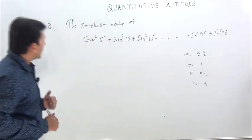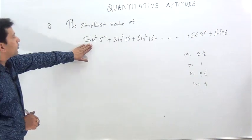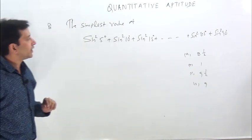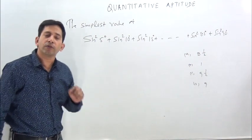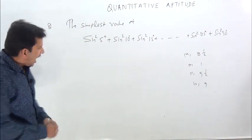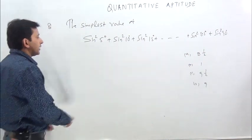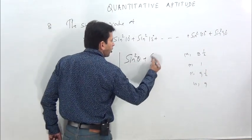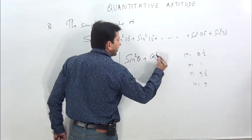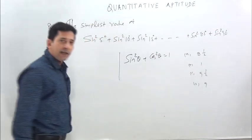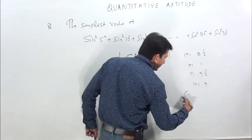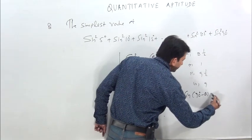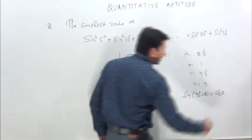I have written a question. Look — what is sin²5° + sin²10° + sin²15° + ... + sin²85° + sin²90°? Now, you will know that sin²θ + cos²θ = 1. And remember, sin(90° − θ) = cosθ.